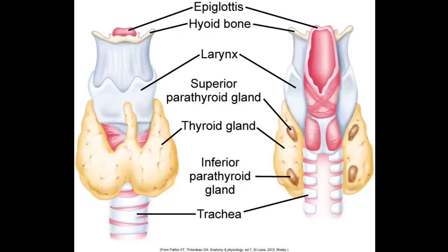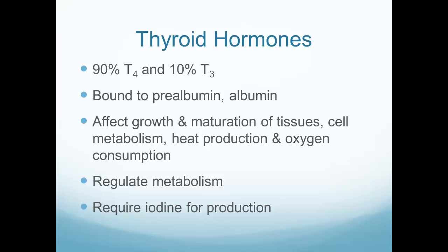The thyroid gland sits in the front of the neck between the larynx and trachea. On the back side of the thyroid are the parathyroid glands. About 90% of thyroid hormone produced is T4, whose primary function is to go out to tissues and wait, then convert to T3 at the tissue level when metabolism needs to increase. T3 is the active hormone that increases metabolism. Only about 10% of thyroid hormone produced by the thyroid is T3 directly.